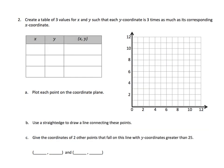In the second problem, we're asked to do something a little bit different. It says create a table of three values for x and y such that each y-coordinate is three times as much as the corresponding x-coordinate. That means we're going to take our x-value and multiply it by three. I like to write the expression y equals three x. That's the same as x times three.